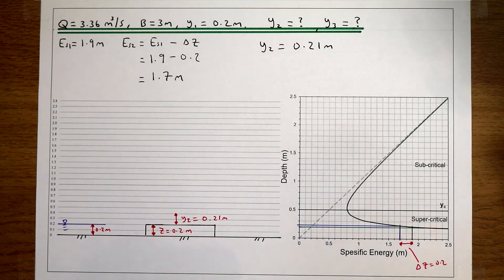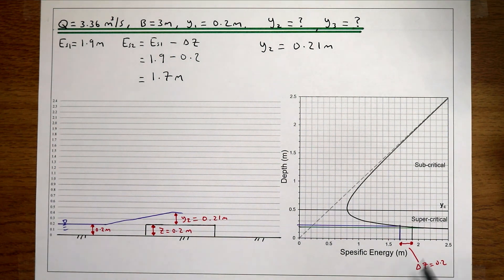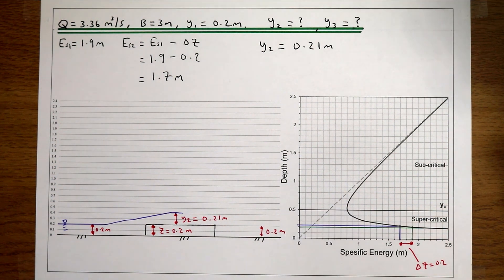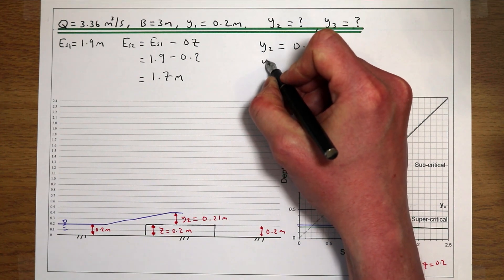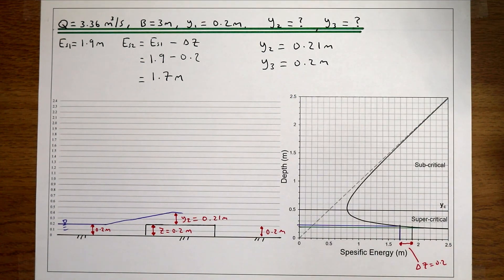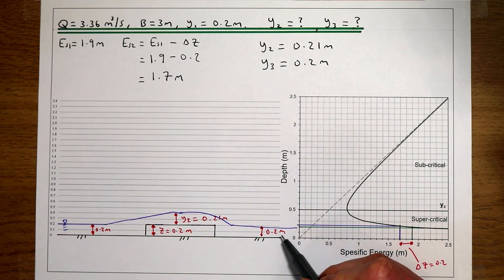So as the flow comes up to this step, it's going to increase to a level of 0.21 metres. For the final flow depth y3, because we haven't passed through the critical flow depth and our flow was initially supercritical, there's no reason to suppose it won't remain supercritical. When the obstruction ends, our flow depth simply returns to the original flow depth. So y3 is going to be back to 0.2 metres — the flow depth increases over the bump, then decreases back to the same depth after the bump.